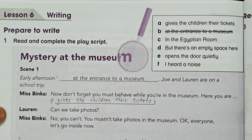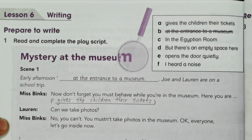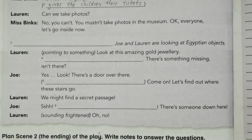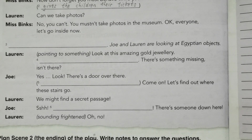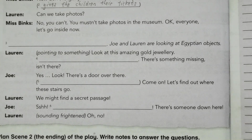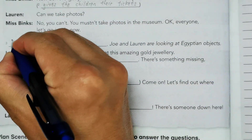Next, Lauren says: 'Can we take photos?' Miss Binks replies: 'No, you can't. You mustn't take photos in the museum.' Then: 'Okay everyone, let's go inside now.' So next we have number 3.